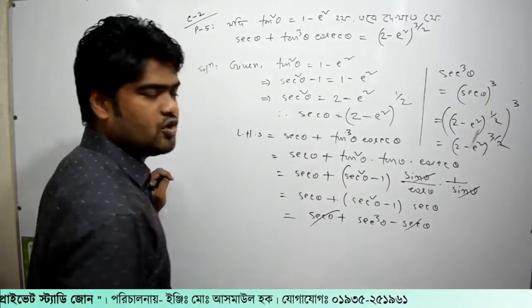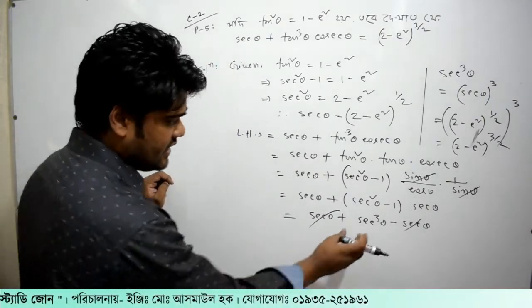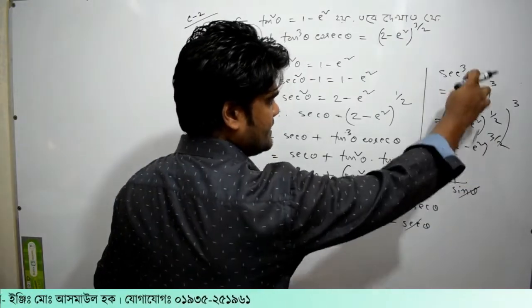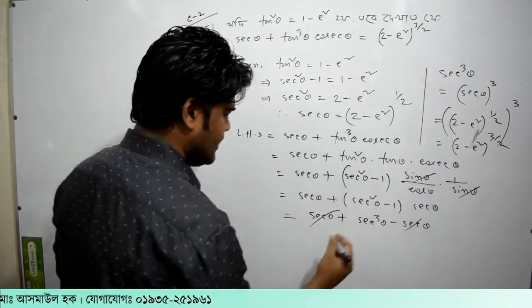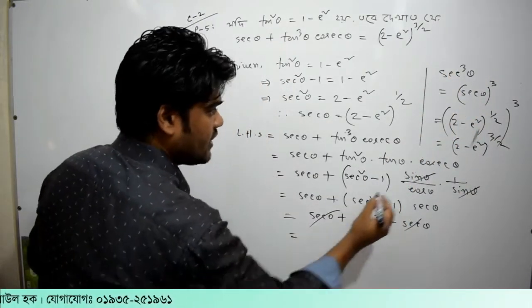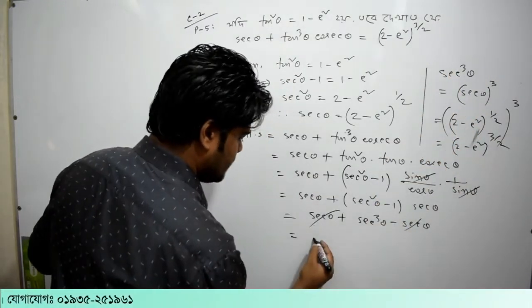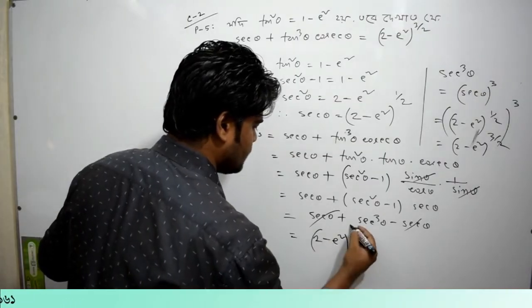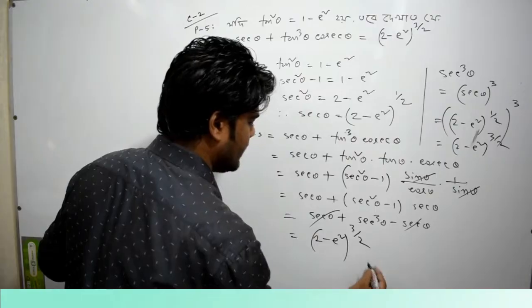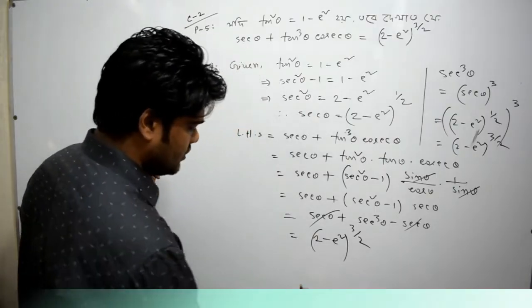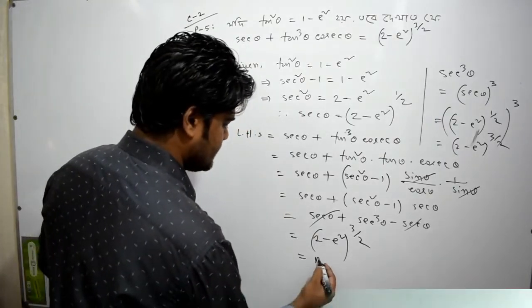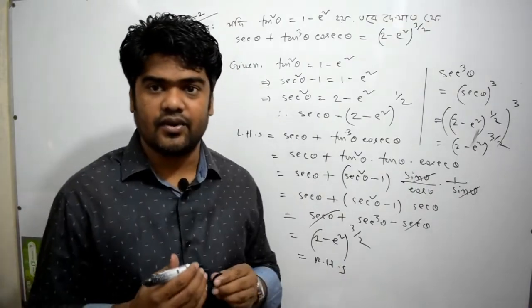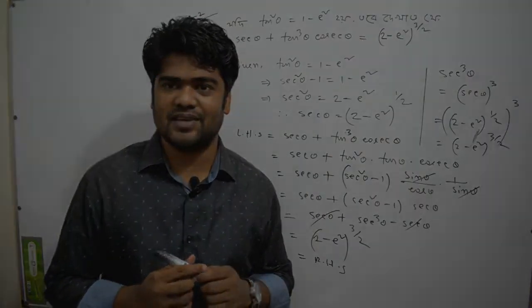So I will write sec cube theta, and I will write 2 minus e square to the power 3 by 2, equal to the right hand side. That's it — goodbye.